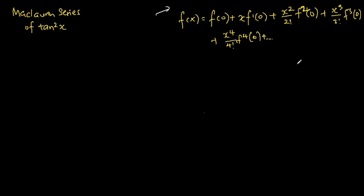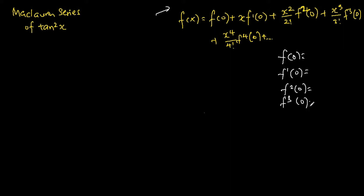Before we are able to find the Maclaurin series, we first have to find the following: the function evaluated at x equals 0, the function differentiated one time evaluated at x equals 0, differentiated two times at x equals 0, three times at x equals 0, and four times at x equals 0 — because we are finding the series up to the x to the power of four terms.